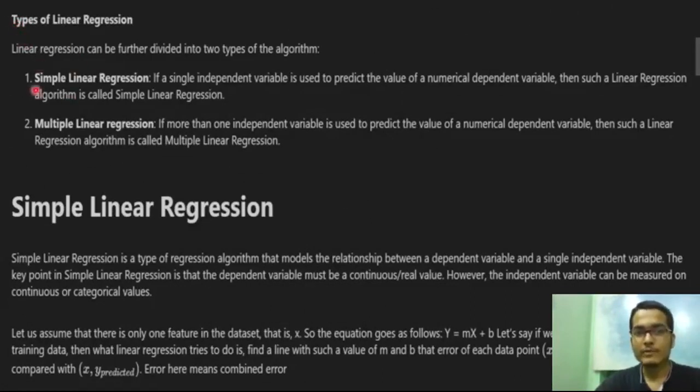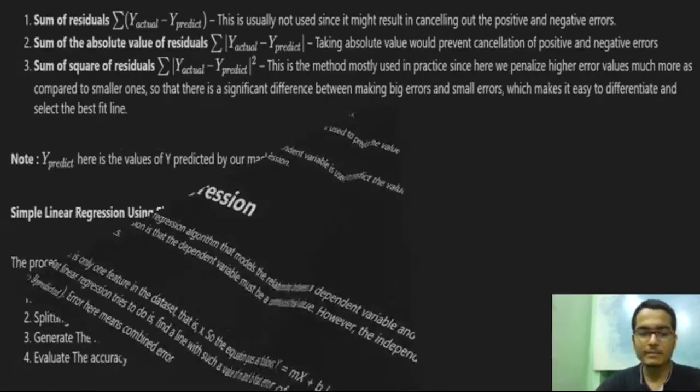What are the types of linear regression? It can be simple linear regression or it can be multiple linear regression. If more than one independent variable is used to predict the value of a numerical independent variable, then such a linear regression is known as multiple linear regression. So let us first see the case of simple linear regression.